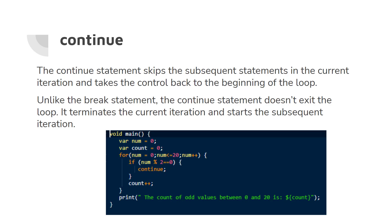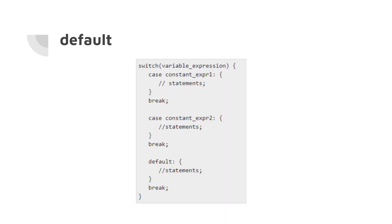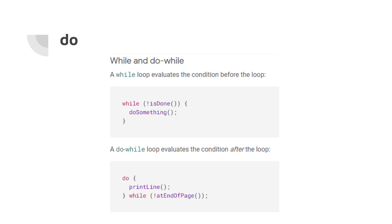The 'default' condition is used in switch — it's like a case but says that if none of the cases are true, the default action is executed. Default is used when you want to specify what happens if none of the cases is true.